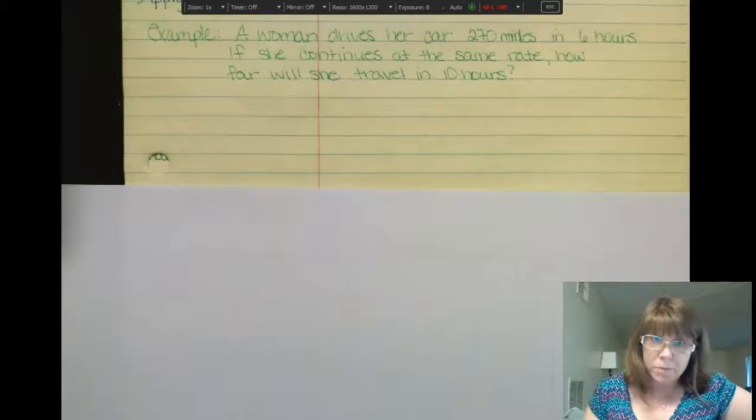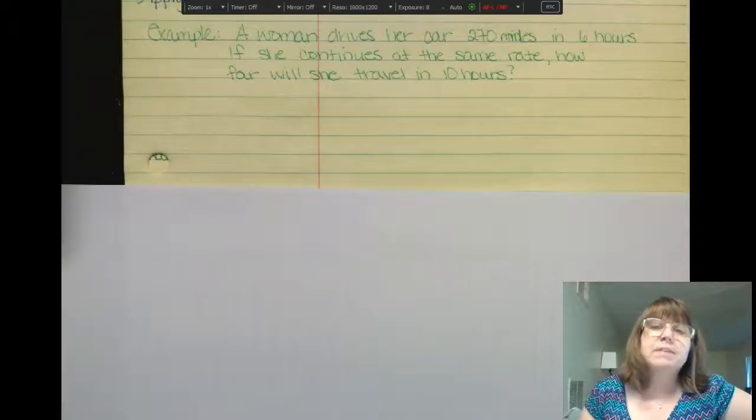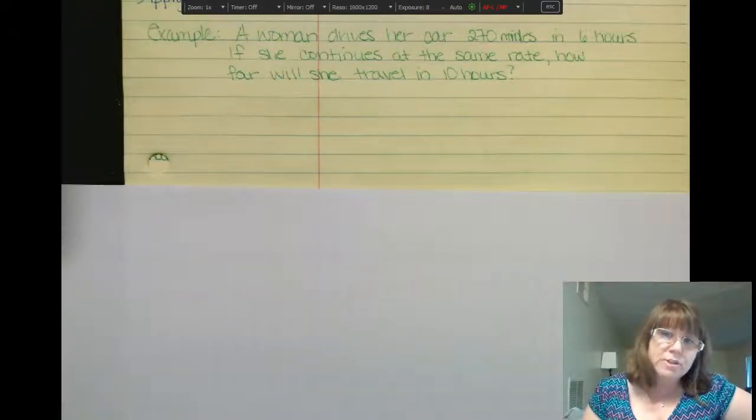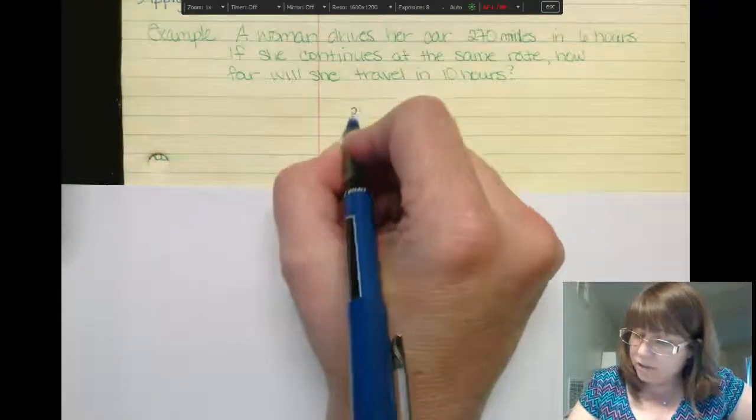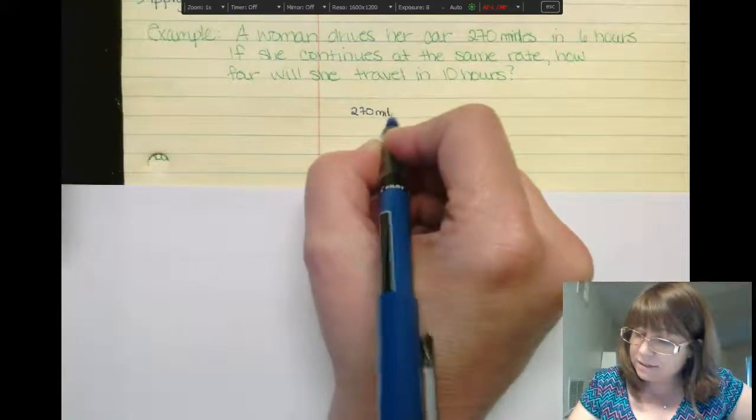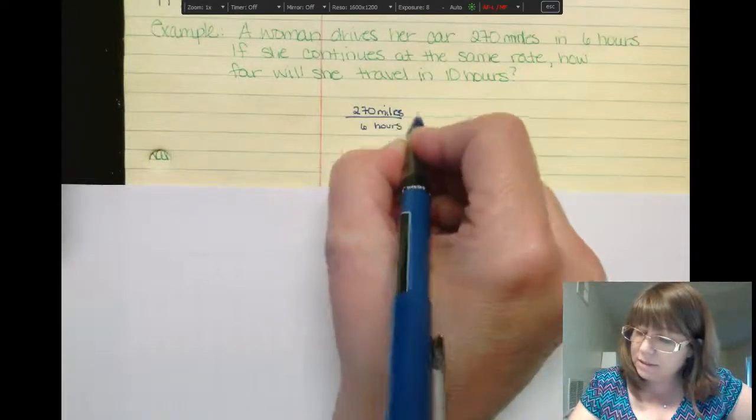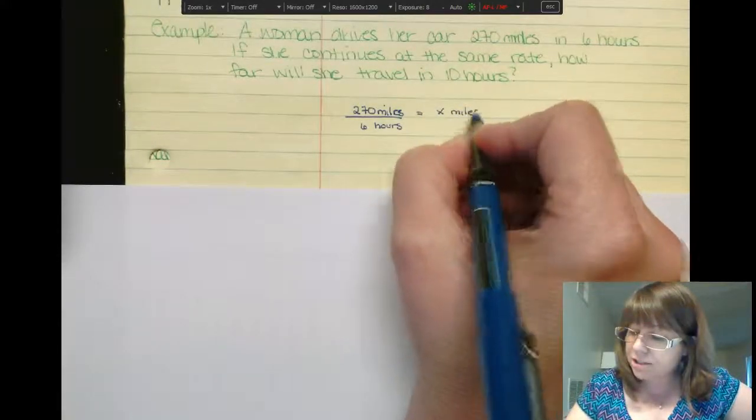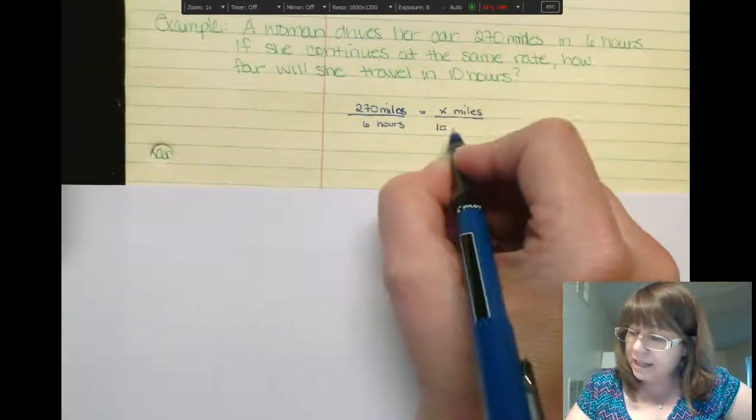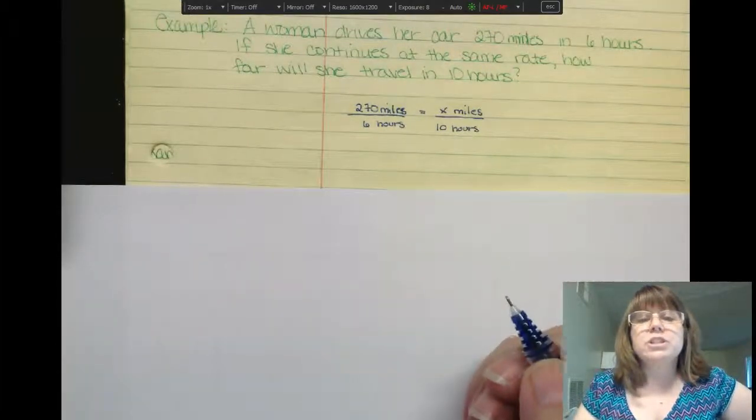So when can I use what I know about proportions? Well, let's take a few examples. Let's say a woman drives her car 270 miles in 6 hours. If she continues that same rate of speed, how far will she travel in 10 hours? So she traveled 270 miles in 6 hours. How far will she travel, we don't know, x miles, we'll just say, in 10 hours.